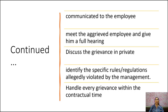Decisions once reached should be communicated to the employee and acted upon by the management. If the decision is unfavorable, its legitimate foundation should be well explained. Directly meet the aggrieved employee and give him a full hearing — that is, listen to him. Discuss the grievance in private. Ask the union representative to identify specific rules or regulations allegedly violated by the management.